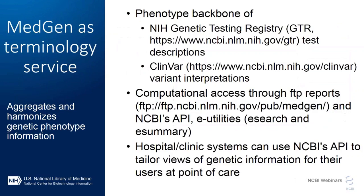MedGen serves as the phenotype source for GTR and ClinVar. This enables us to standardize disease names across tests from all labs, as well as standardize phenotypes in variant interpretation in ClinVar. All our data is freely available for download. Because MedGen aggregates phenotype data from different sources and preserves the source identifiers, it can be integrated in electronic medical records software to standardize genetic disease names in the community. Hospital systems can use NCBI's API to tailor-view genetic information for their users at the point of care. MedGen processes updates from sources as they become available, mostly in automated workflows.